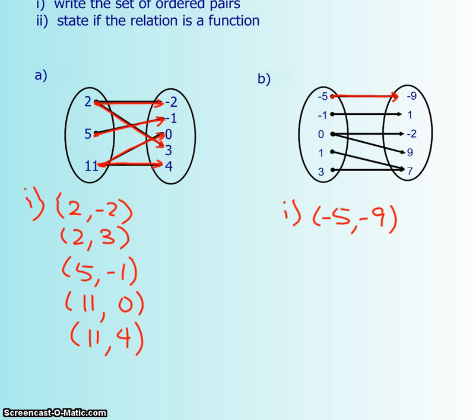And let's do the same for the other one. Negative 5, negative 9, negative 1 and 1, 0 goes to 2, and then 1 goes to 7, but then 3 also goes to 7.